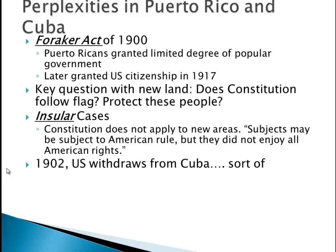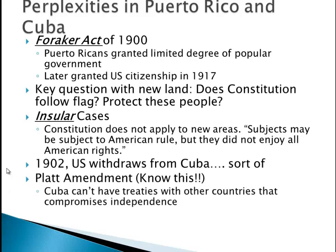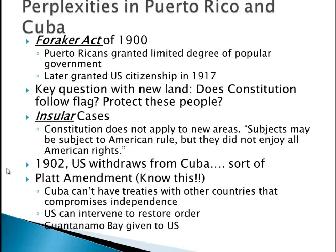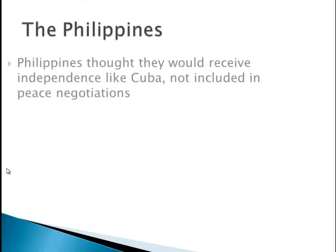In 1902, the U.S. withdraws from Cuba — sort of — but we have something known as the Platt Amendment, probably the most important act we're talking about. Cuba cannot have treaties with other countries that compromise its independence. The U.S. can intervene and restore order, and most importantly, Guantanamo Bay is given to the United States. That's why even today when the U.S. and Cuba don't get along, the U.S. still has Guantanamo Bay — it all goes back to the Platt Amendment.